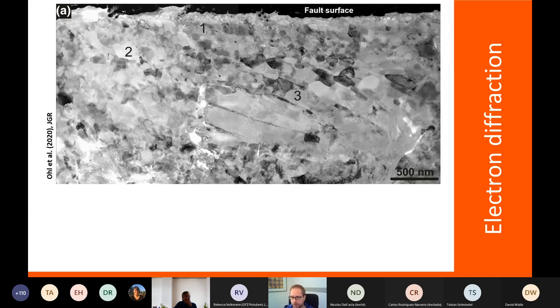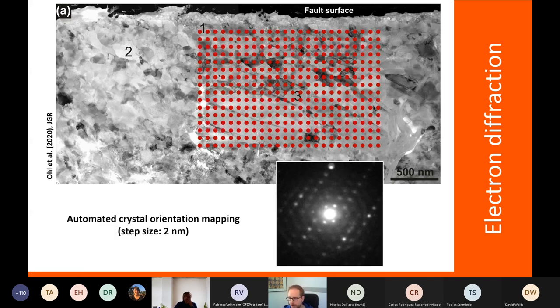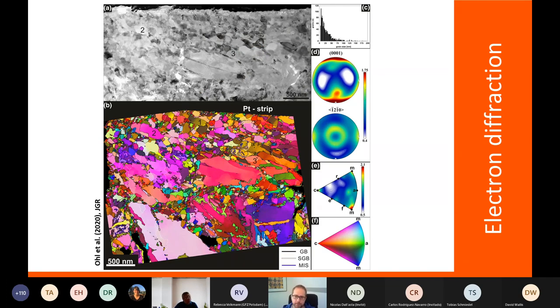This here is a bright-field TEM image of an earthquake fault from Greece, and this image is actually relatively complicated to interpret. But now let's map every two nanometers. We collect diffraction patterns in this area or even wider, and then we can produce a nanometer scale resolution orientation map and use the same techniques that David Wallace explained earlier to analyze this, to look at the misorientations of the grains, the lattice preferred orientation and so on, but now we have a look with a resolution down to about two nanometers.